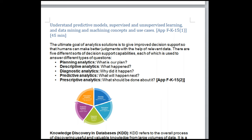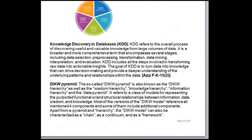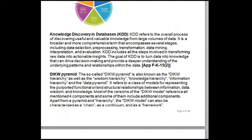The DIKW pyramid, also known as the DIKW hierarchy or the wisdom hierarchy, knowledge hierarchy, information hierarchy, and the data pyramid, refers to a class of models for representing the functional and structural relationships between data, information, knowledge, and wisdom. Most versions of the DIKW model reference all four components. The model can be characterized as a chain, a continuum, and a framework: Data → Information → Knowledge → Wisdom.